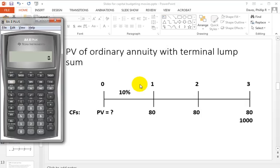We're going to use the BA2 Plus here in order to find the present value of an ordinary annuity when we also have a terminal lump sum.